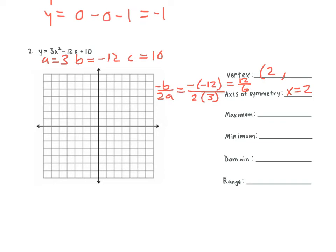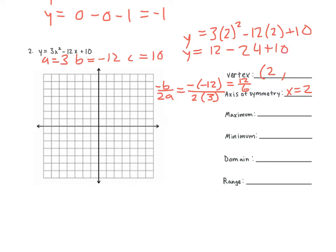How do we find our second number? Plug it in. So we have y is equal to 3 times 2 squared minus 12 times 2 plus 10. What is 2 squared? Four. And 4 times 3 is 12. So we have 12 minus 24 plus 10. 12 minus 24 is negative 9, and negative 9 plus 10 is negative 2. So our vertex is 2 comma negative 2.